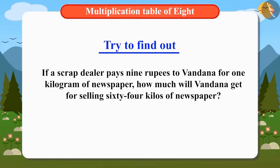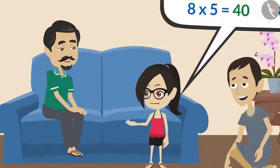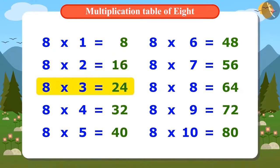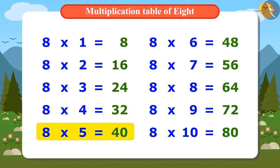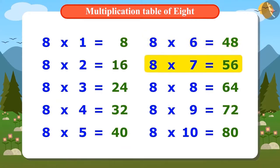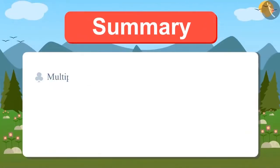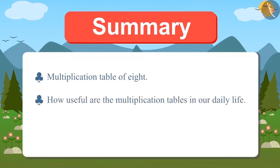Let's memorize the table of 8. Vandana has even started singing: 8 ones are 8, 8 twos are 16, 8 threes are 24, 8 fours are 32, 8 fives are 40, 8 sixes are 48, 8 sevens are 56, 8 eights are 64, 8 nines are 72, 8 tens are 80. Today we have learned the multiplication table of 8 and how useful multiplication tables are in our daily life.